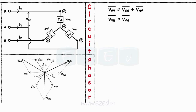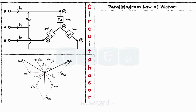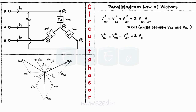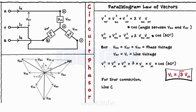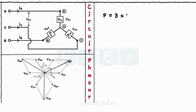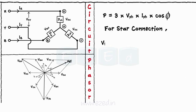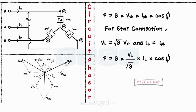From the phasor diagram, the angle between Vrn and Vny equals 60 degrees. According to the parallelogram law of vectors: Vry² = Vrn² + Vny² + 2·Vrn·Vny·cos(angle between Vrn and Vny). But Vrn = Vny = Vph and Vry = VL. Hence we get the relation VL = √3·Vph. From the circuit diagram, the line current equals the phase current for the star connected system. The power is given as P = 3·Vph·Iph·cosφ. But VL = √3·Vph and IL = Iph, hence power equals √3·VL·IL·cosφ.